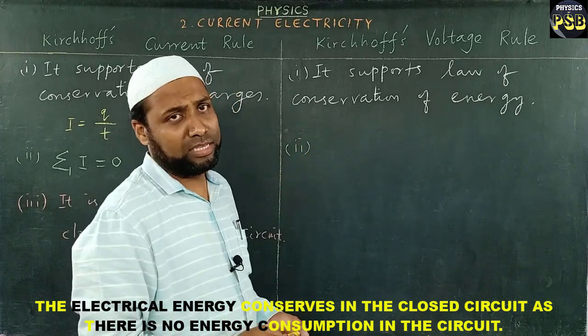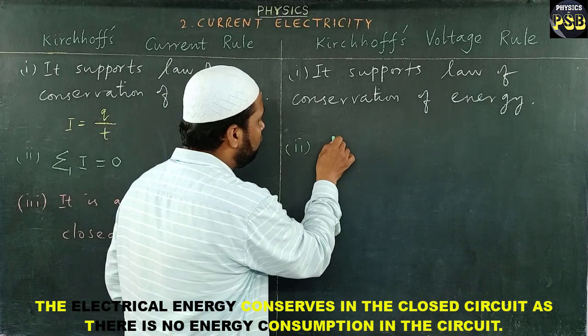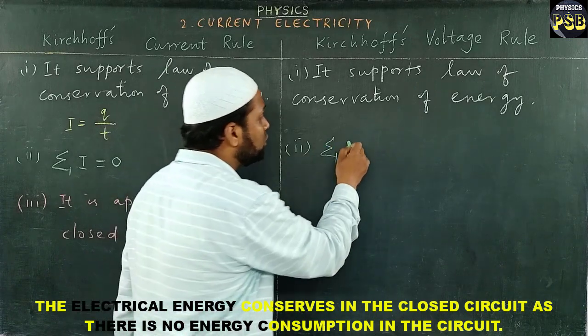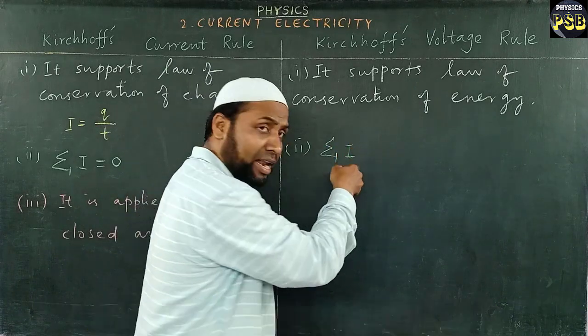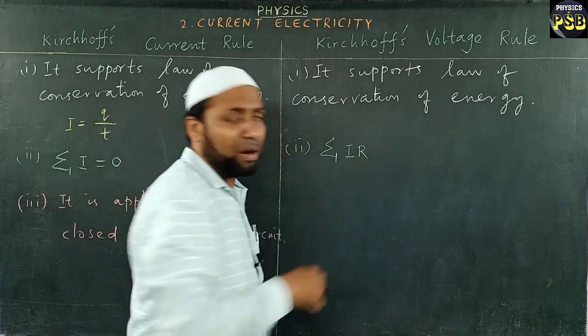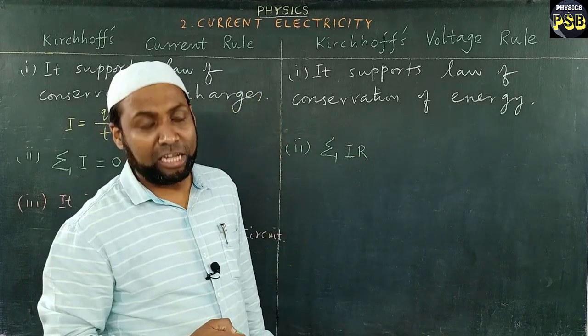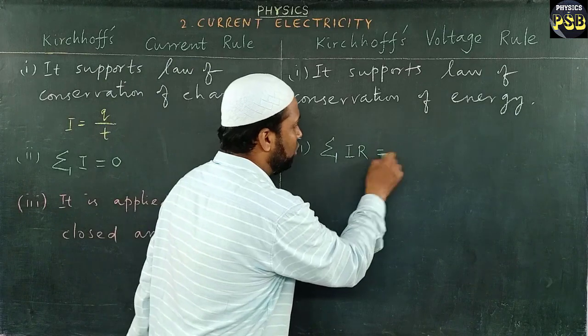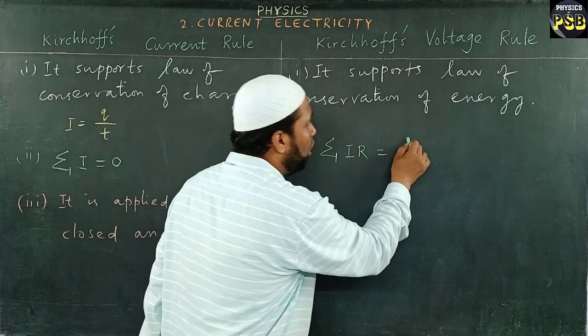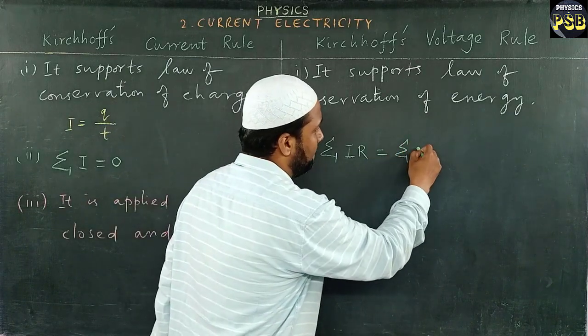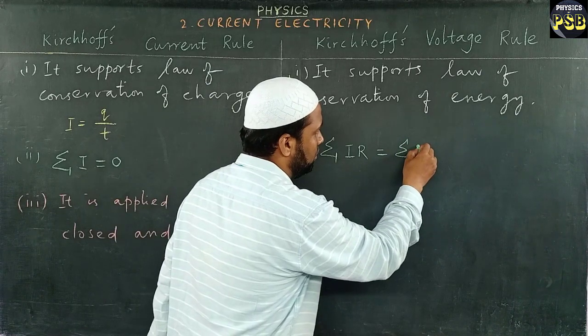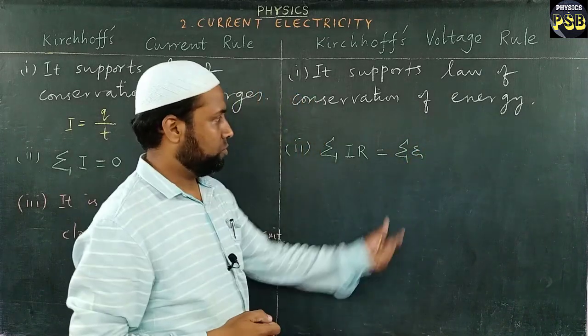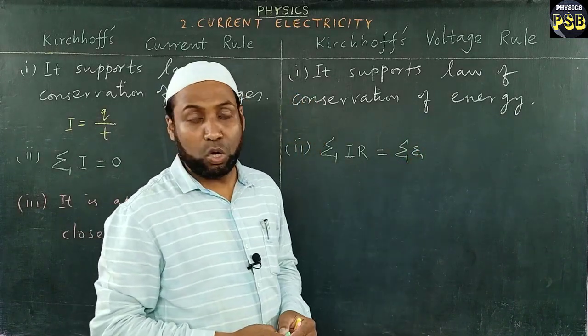Kirchhoff's voltage rule says that sum of product of current and resistance in each part of a closed circuit is equal to the total EMF in that closed circuit.